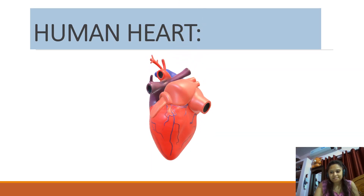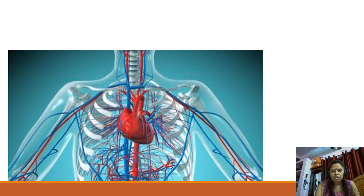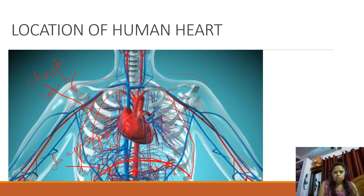First, we will know the location of the human heart — where exactly it is present. This is a human body, and on both sides there are ribcages. Just below the ribcages there is a dome-shaped membrane known as the diaphragm. This diaphragm separates the upper body cavity from the lower body cavity. The upper body cavity is known as the chest cavity, and inside the chest cavity there are two lungs — one on the left side and one on the right side.